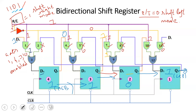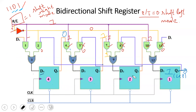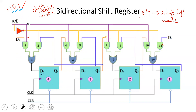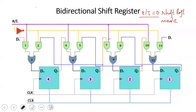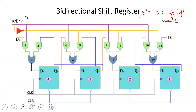Similarly, shift-left works in the same way. In shift-left mode, the control input is 0. The purple line becomes 0, so gates 1, 4, 7, and 10 are disabled. The yellow line goes through a NOT gate and becomes 1.